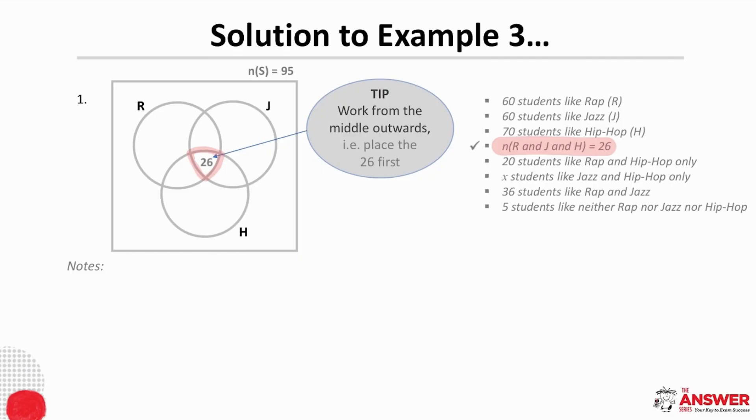Next, we look to see if we can fill any of these areas. It says here that 20 students like Rap and Hip Hop only. And so we put 20 in this section here. It also says that X students like Jazz and Hip Hop only. And so this here is X. Then if we have a look at this statement, 36 students like Rap and Jazz. The difference with this statement is the word only is not used. In other words, this statement refers to this area here, the whole overlap between Rap and Jazz. And so 36 minus 26 leaves us with 10 for here.